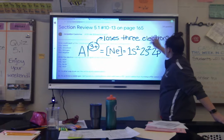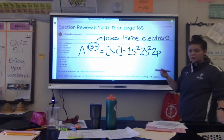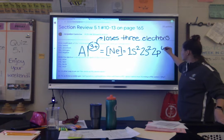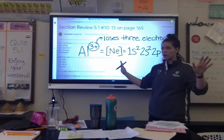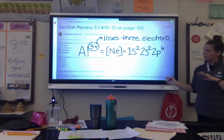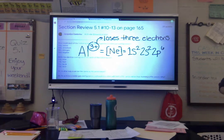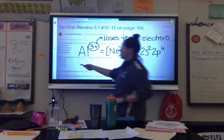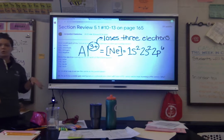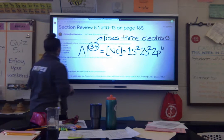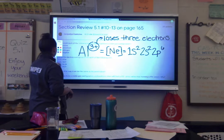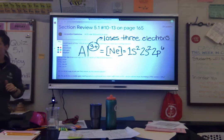Now here's the funky part — what's different about the D block? There are 10 of them, but also, we don't go off the period number. We go off the period number minus 1. So we're not going to write 4d10 — we write 3d10.